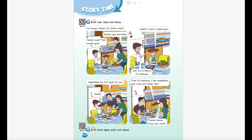Unit 10 Recording 16. Look, listen and follow. I'm hungry. What's for dinner, Mom? Tomato soup and salad. Tomato soup? That sounds good. Salad? I want a hamburger. Just try it, Mira. It's delicious. Vegetables are very good for you. Really? Yum, it's delicious! I like vegetables. And I like your salad, Mom. Thanks, Mira. Enjoy your meal.